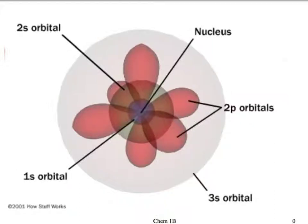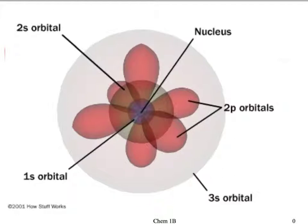Today we're going to start looking at electron orbitals and finding where electrons lie in the atom. Up here is a picture of the modern atom with all these three-dimensional shapes. It looks a lot different than our normal Bohr atom with just the orbitals and the electrons going in circles. There are different places where the electrons lie, and these are called orbitals.